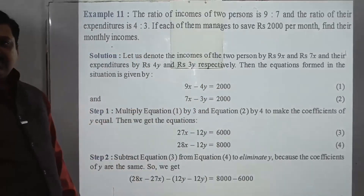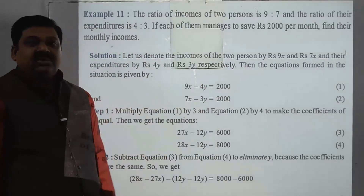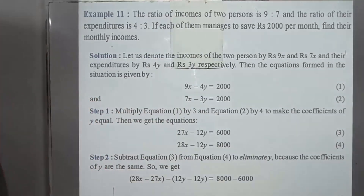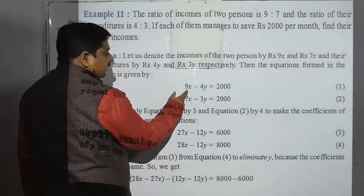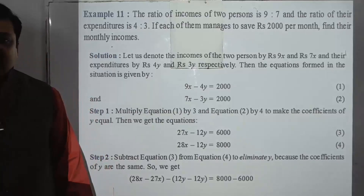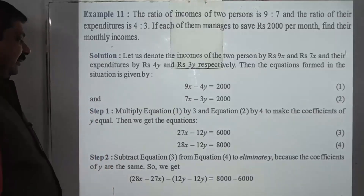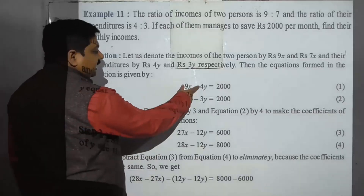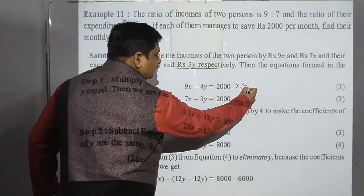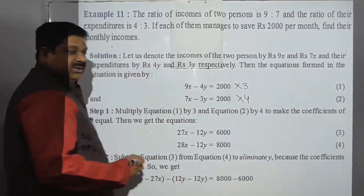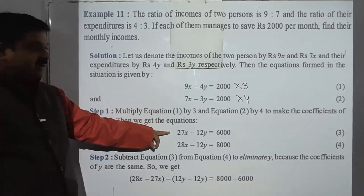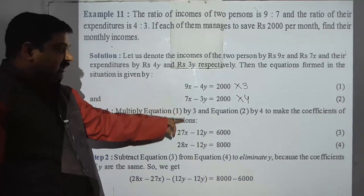Similarly, the second person's income minus expenditure equals saving. So two equations are formed. Now to solve by elimination method, we make the coefficients of x or y the same so we can cancel one out. Here, to make the y coefficients equal, we multiply the first equation by 3, giving 27x minus 12y equals 6000.